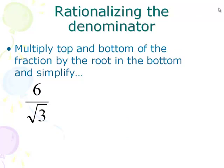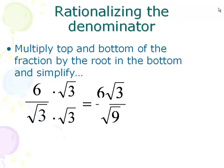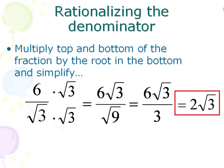In this first example, we have 6 divided by square root of 3. If the square root of 3 were on the top of the fraction, that would be okay, but it's on the bottom and we can't have that. So we multiply top and bottom by square root of 3. We get 6 square root of 3 on top over square root of 9 on the bottom. Square root of 9 simplifies to 3, and 6 over 3 reduces to 2, so 2 square root of 3 is our final answer.